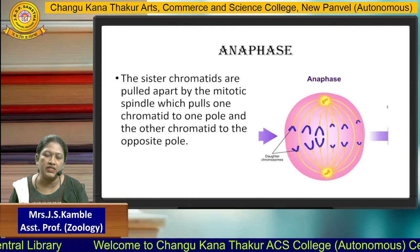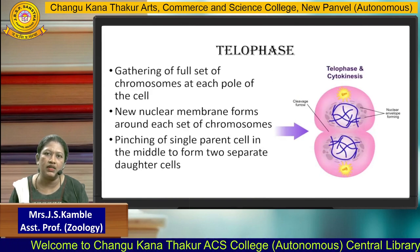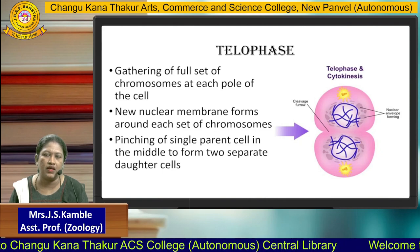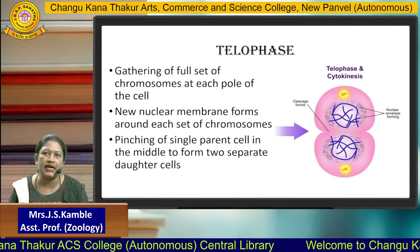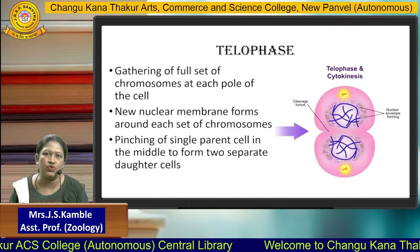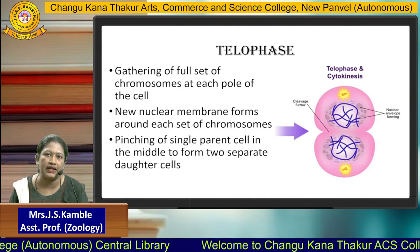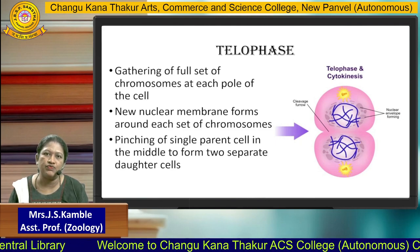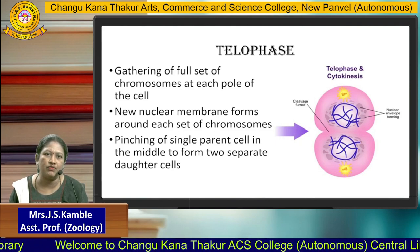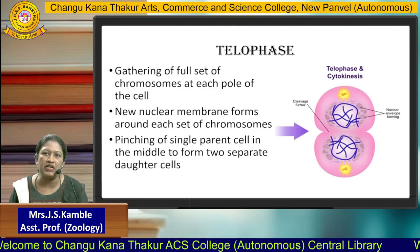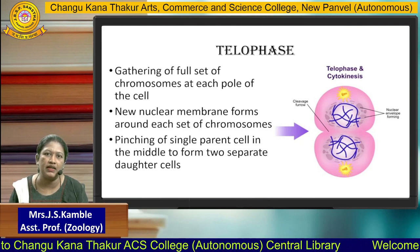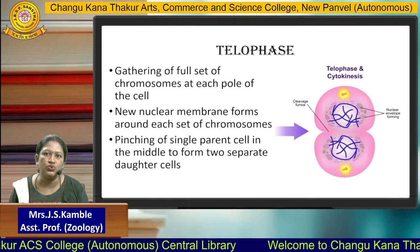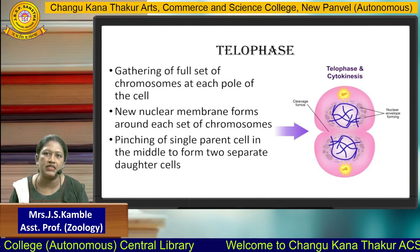After the anaphase, the cell goes into the next stage, called telophase. In the telophase, there is a gathering of the full set of chromosomes at each pole of the cell. A new nuclear membrane is formed around each set of chromosomes. Simultaneously, there is a pinching of the single parent cell in the middle to form two daughter cells, which then start separating from each other.